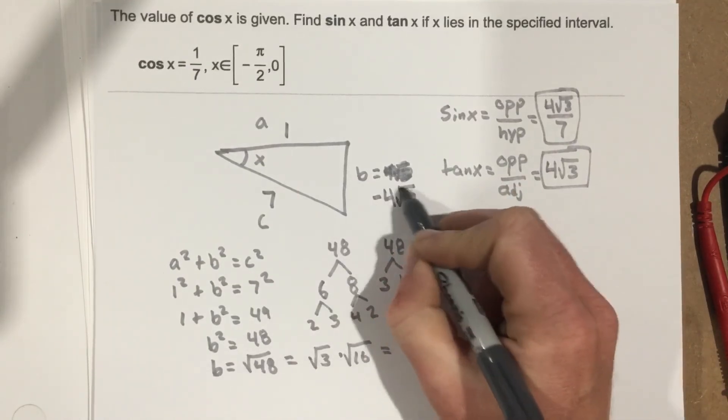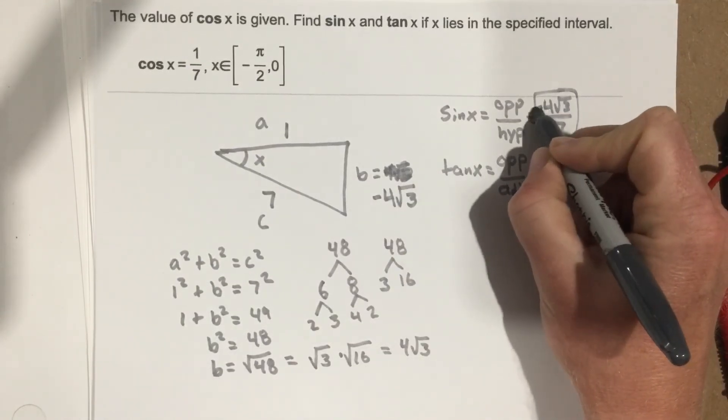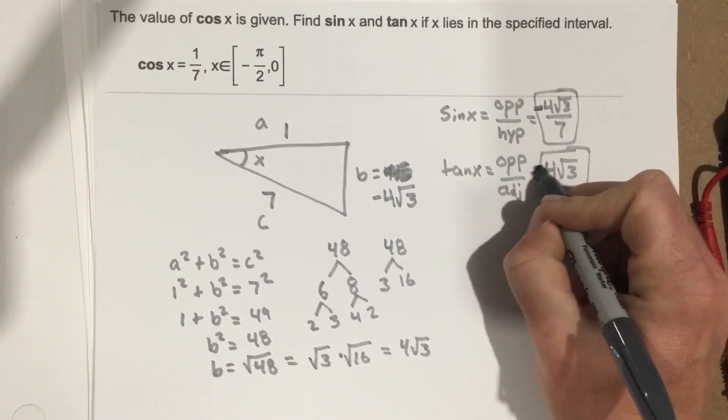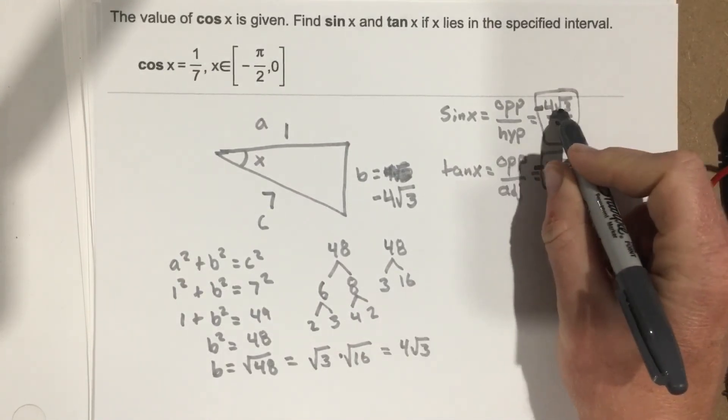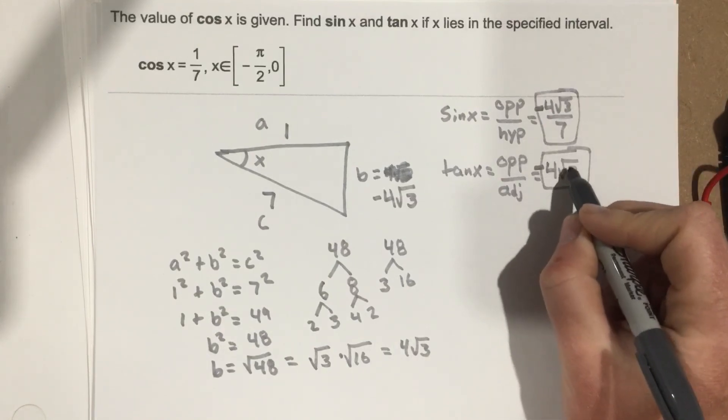Now, because this is negative 4 root 3, this is actually negative, and this is negative. So our solutions are negative 4 root 3 over 7 and negative 4 root 3.